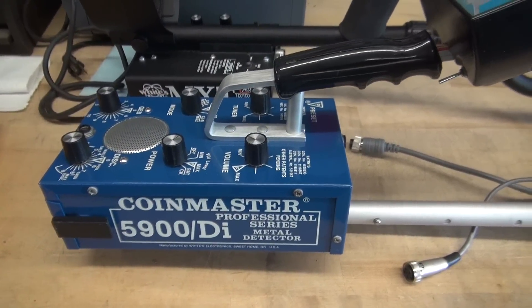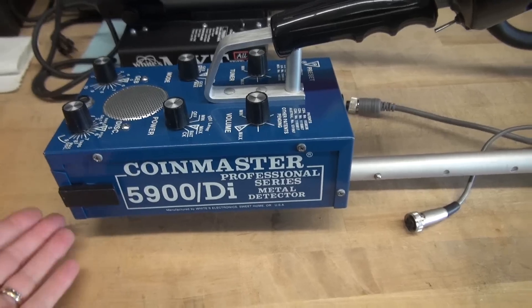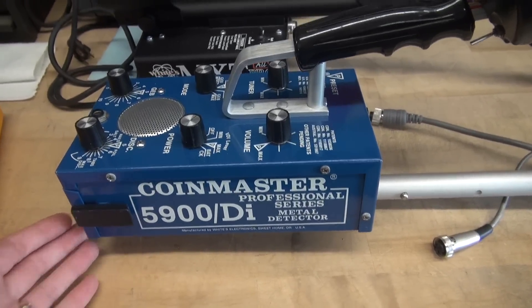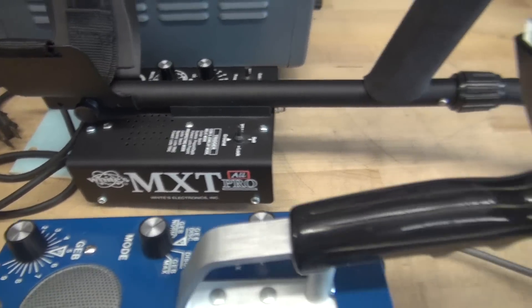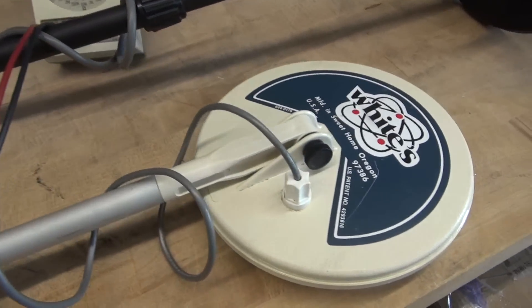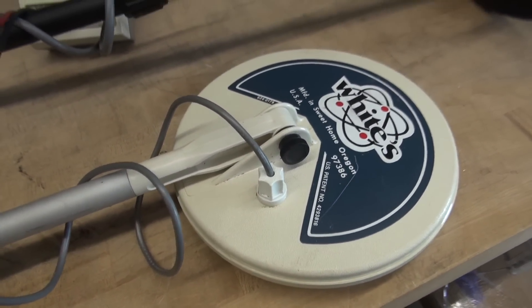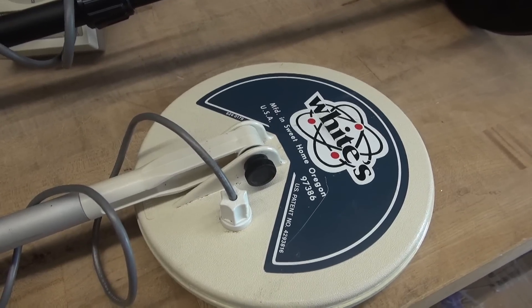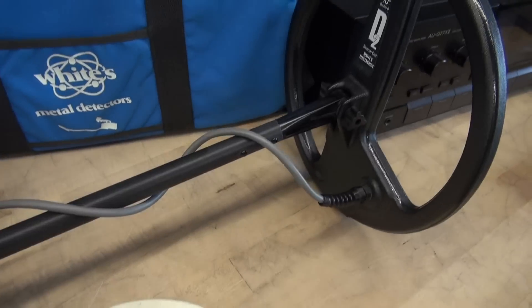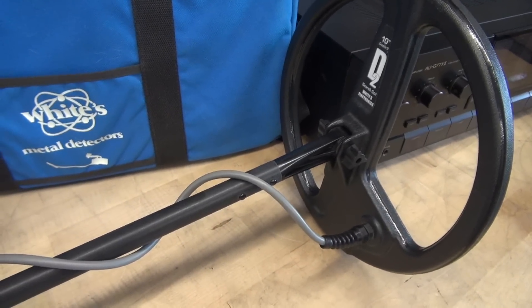So once again, the only two detectors that I have in the shop is the Coin Master 5900 and the new White's MXT All Pro. They both have search heads, and what's really cool is the wiring on both of these heads is the same, although their operating impedance is different.